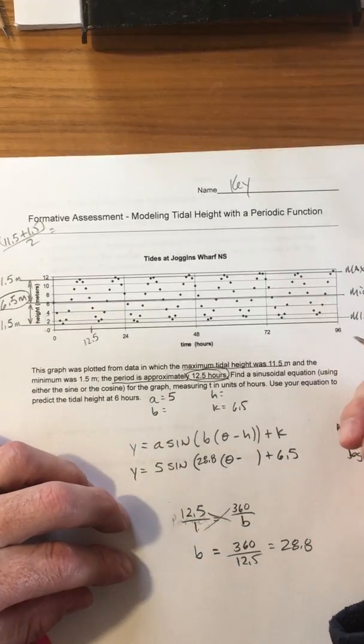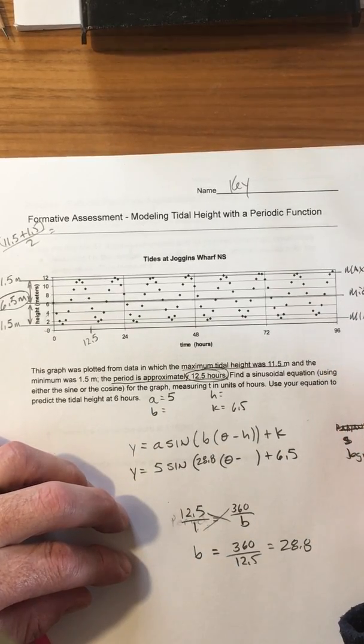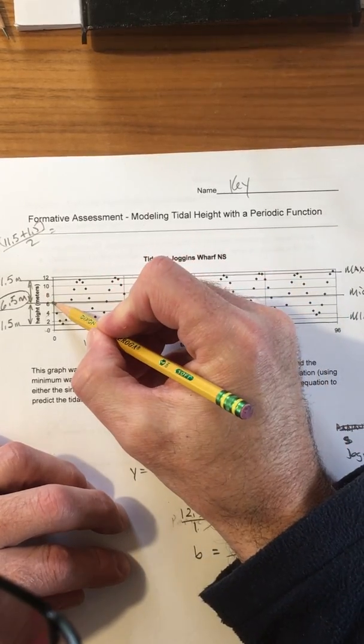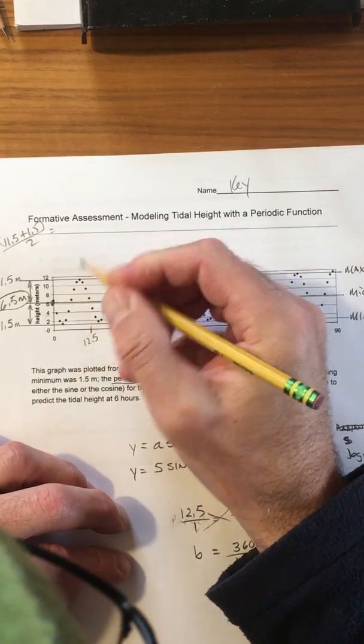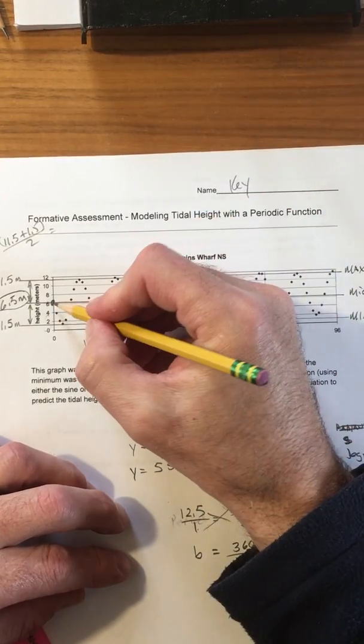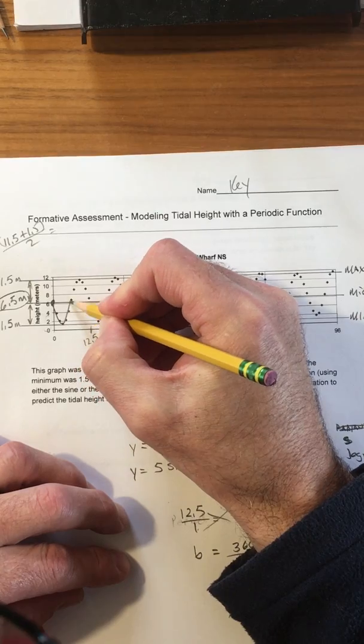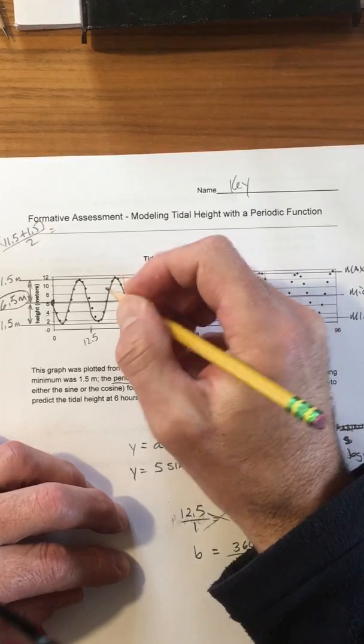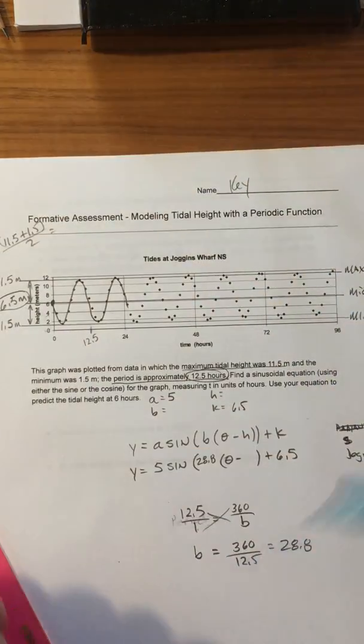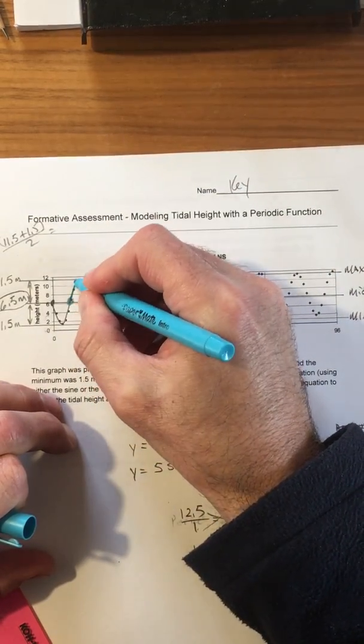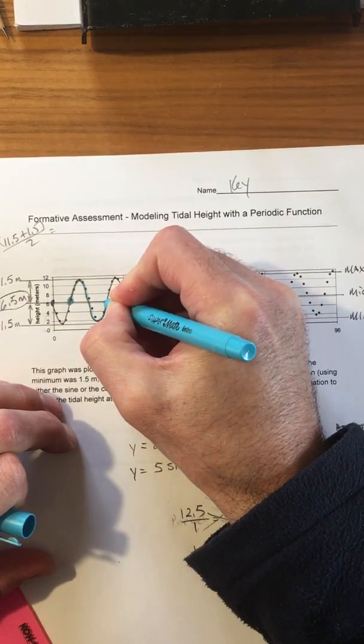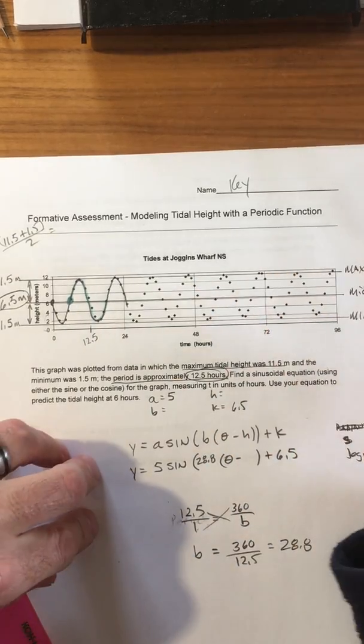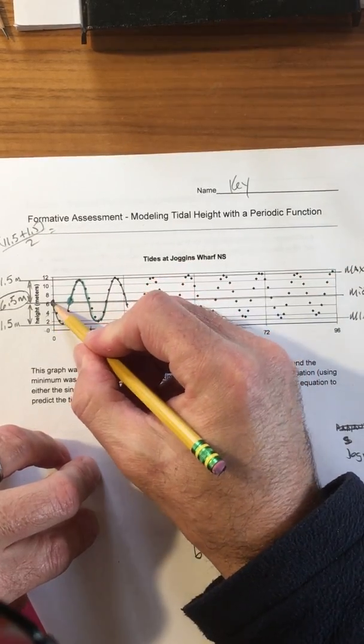Okay, so then the last thing we need to do is we need to find where is the horizontal shift. All right, well here's the sine and we know that it kind of looks like that. And the other thing that we know is that the sine always starts in the middle going up.